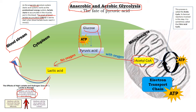Going back to the mitochondria — the powerhouse of the cell — with sufficient oxygen present, pyruvic acid is converted into acetyl coenzyme A, which then enters the Krebs cycle. There are about nine different chemical reactions that happen within the Krebs cycle, and that also produces ATP. The electron transport chain then creates a significant amount of ATP as well.